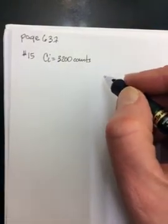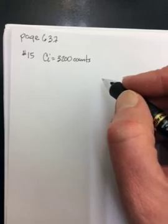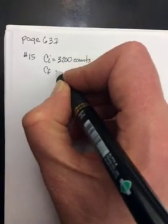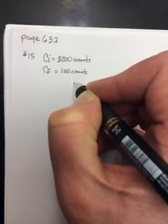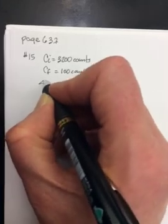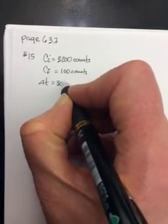Measuring a radioactive substance and 100 counts, so CF is 100 counts, 30 hours later, so delta T, 30 hours.